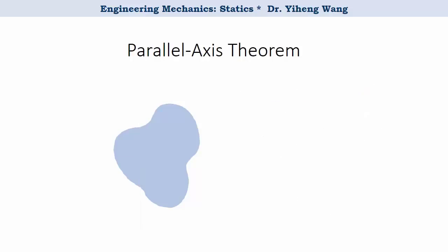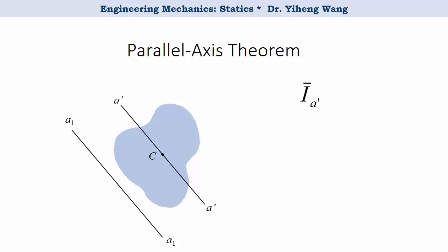A very useful and important theorem is the parallel axis theorem. For an area, if you know the position of its centroid, point C, and there is an arbitrary axis passing through its centroid, axis A', and you know the area moment of inertia about this axis, I_A' bar — then for another axis parallel to A', say axis A1, that has a perpendicular distance D1 from A', the moment of inertia about A1 can be calculated by the parallel axis theorem as I_A' bar plus A times D1 squared.